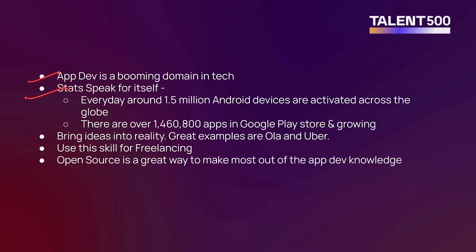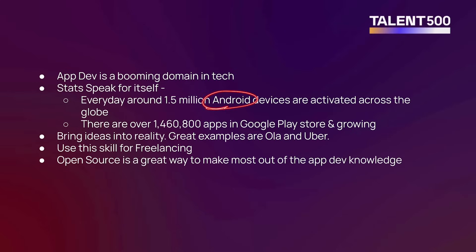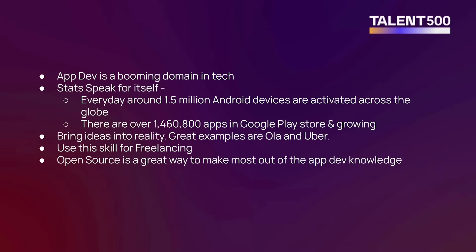Statistics speak for themselves: every day around 1.5 million Android devices are activated across the globe. The number of smartphone users — whether for Android or for iOS iPhones — is increasing day by day. There are two main operating systems: Android and iOS. The number of apps in the Google Play Store is also growing.